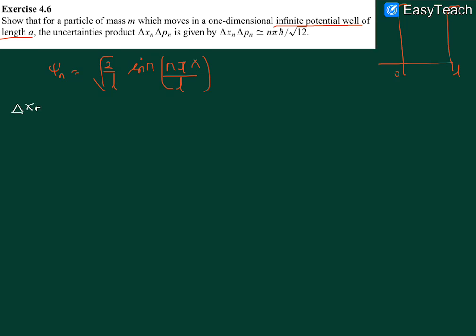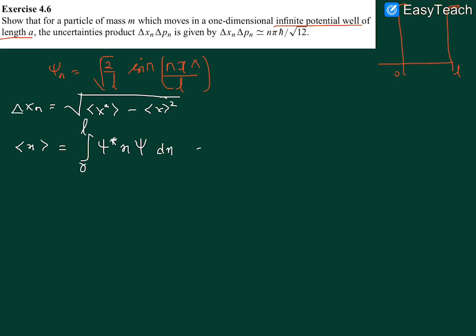We have to find delta x_n, which is defined as the square root of the mean of x squared minus the square of the mean. We first calculate the mean of position. The limits are originally from minus infinity to infinity, but since psi is zero outside [0, L], we only need to integrate from zero to L.